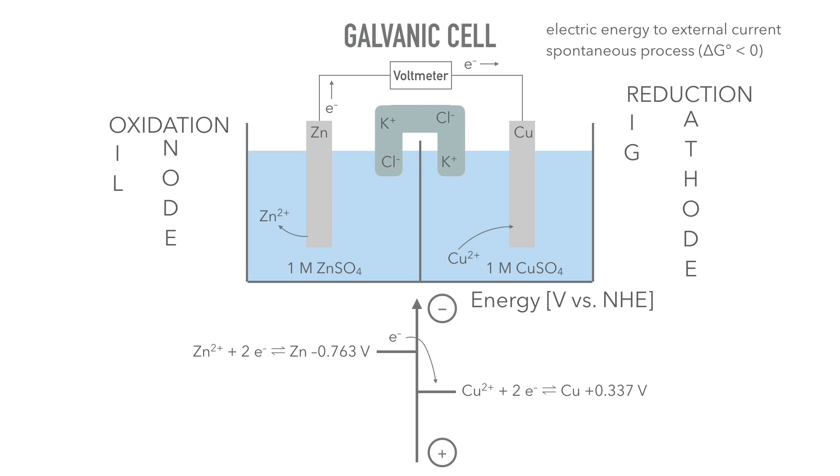The zinc is being oxidized and zinc 2-plus ions are released into the solution. Electrons flow over the load towards the copper cathode. There, copper 2-plus ions are reduced to copper zero. In this cell, the negative pole is the anode because the zinc has a more negative potential.